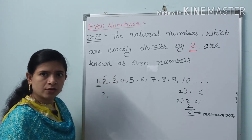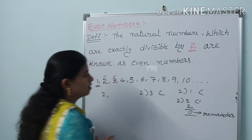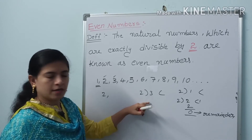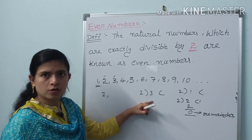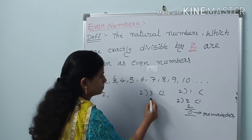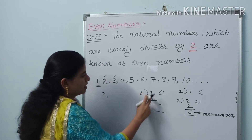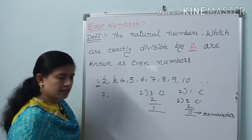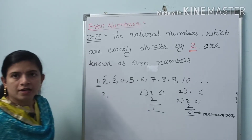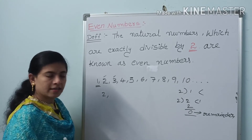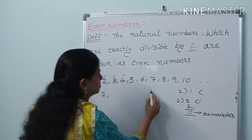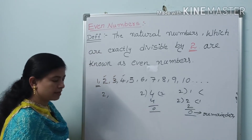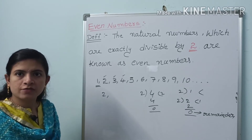Let us take 3. Is 3 exactly divisible by two? 2 ones are 2, so 3 minus 2 equals 1 — the remainder is 1. So 3 is not exactly divisible by two, and 3 is not an even number. Let us take 4. Is 4 exactly divisible by two? Yes. 2 twos are 4, so 4 minus 4 equals 0 — remainder is 0. So 4 is an even number.